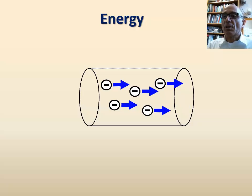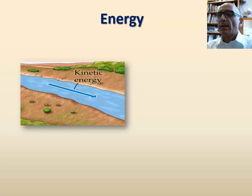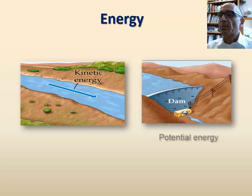A good analogy of potential energy and kinetic energy is the flow of water in a river. Water movement represents kinetic energy, and the accumulation of water behind a dam represents potential energy.